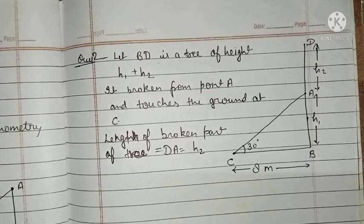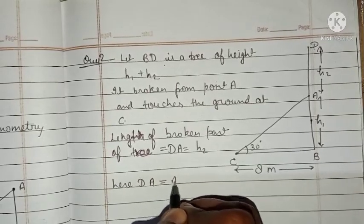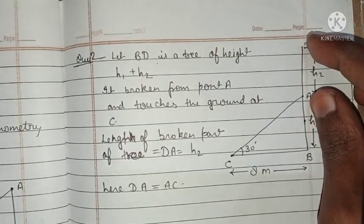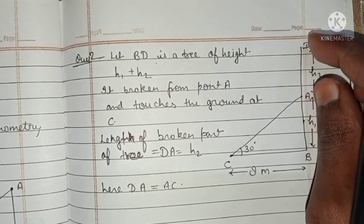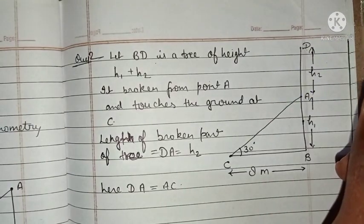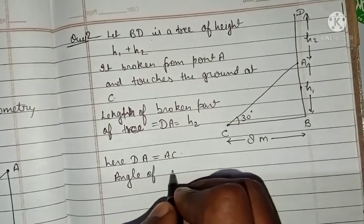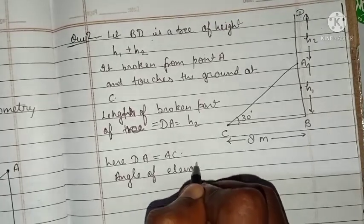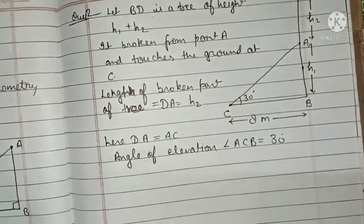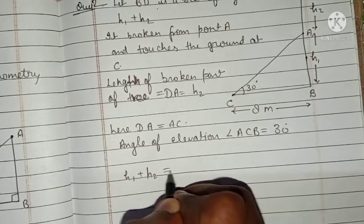DA and AC are equal because DA is the broken part and it touches the ground at point C. Angle ACB equals 30 degrees. We have to find h1 plus h2, that is BD.